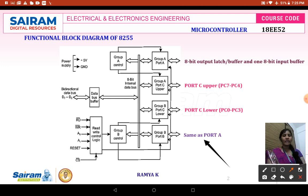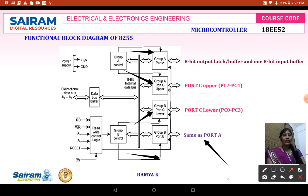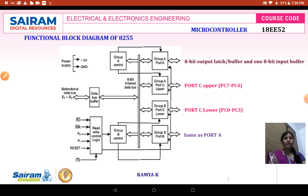Port A is controlled independently by Group A control, and Port B is controlled independently by Group B control. Port C upper is controlled by Group A control, while Port C lower is controlled by Group B control. So Port C uses both Group A and Group B controls, handling both groups simultaneously.